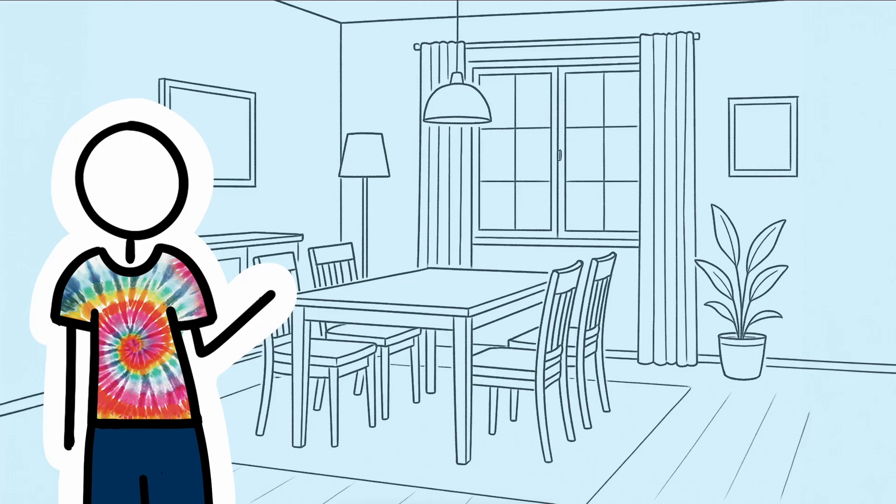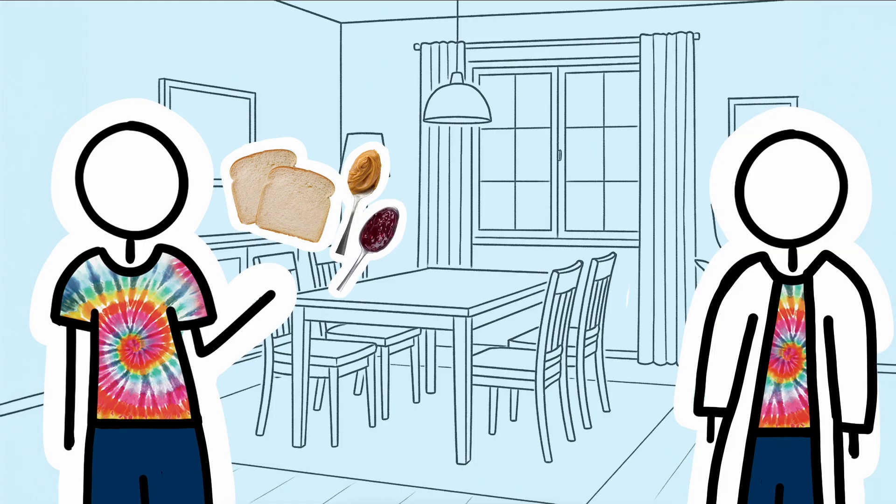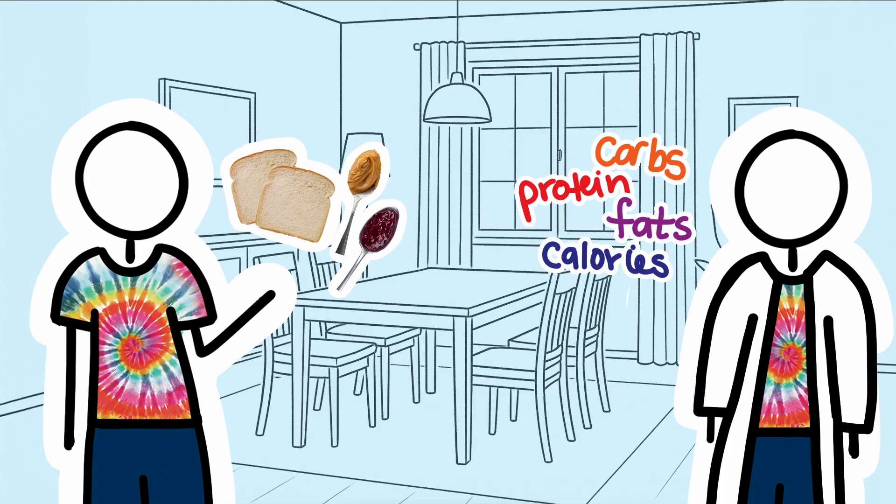If you asked me what I had for lunch, I could say that I had two slices of bread, a serving of peanut butter, and a serving of jam. But my doctor has me on a special diet, and I need to track something different. Carbs, proteins, fats, and calories.